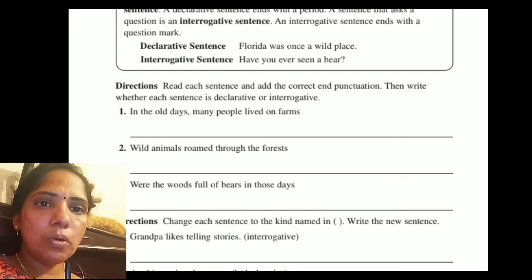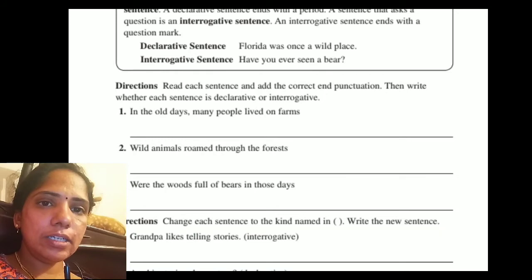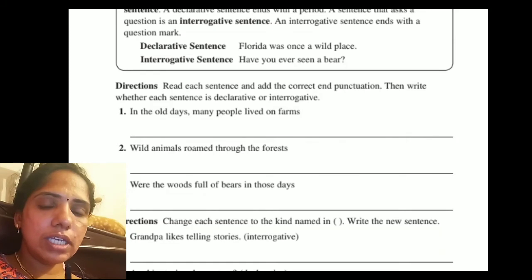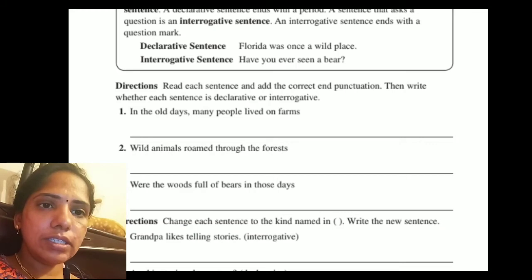'Wild animals roamed through the forests.' This is also a declarative sentence, so we add a full stop. Then: 'Were the woods full of bears in those days?' This is an example of an interrogative sentence, so by the end of the sentence we have to add a question mark.